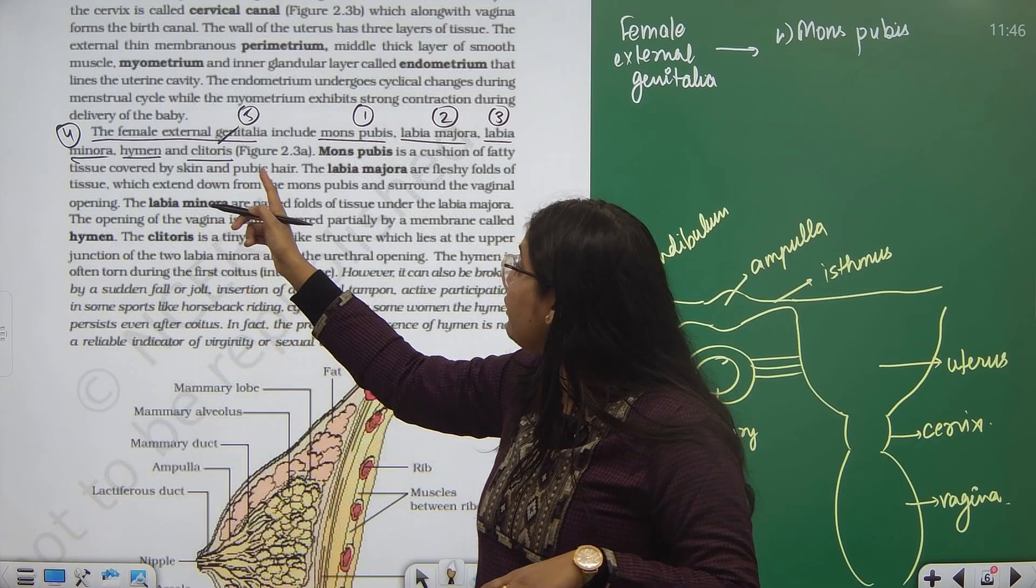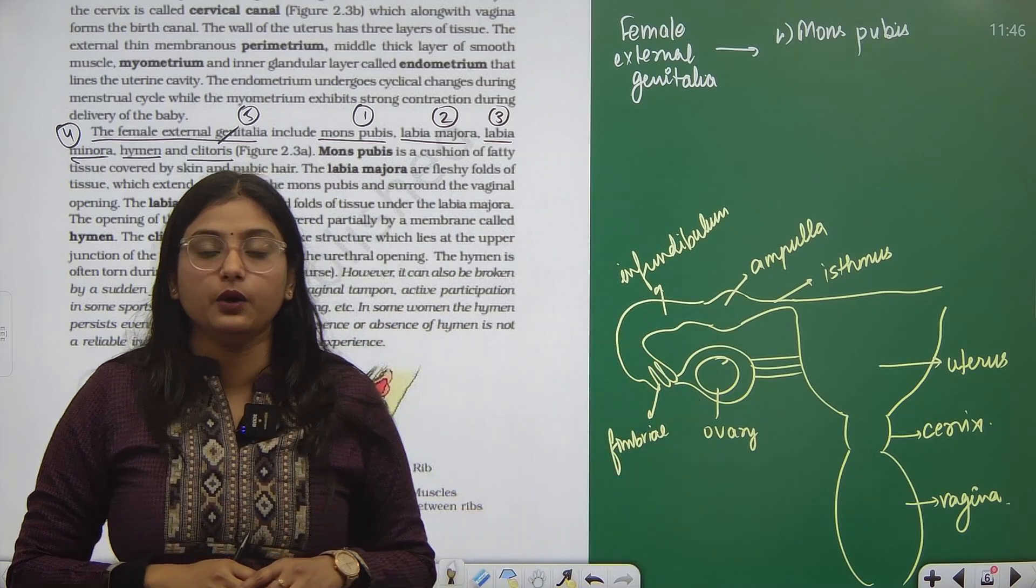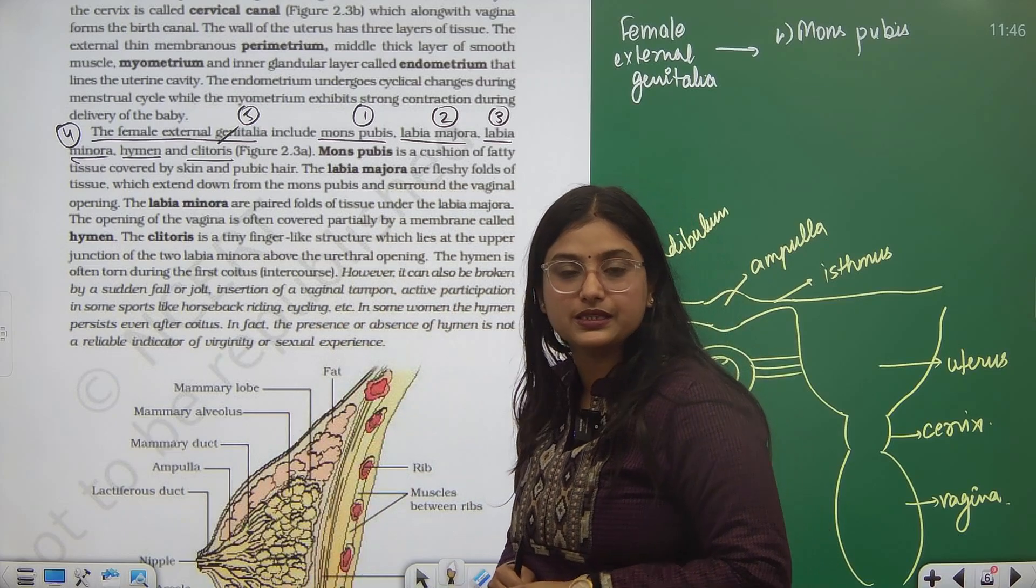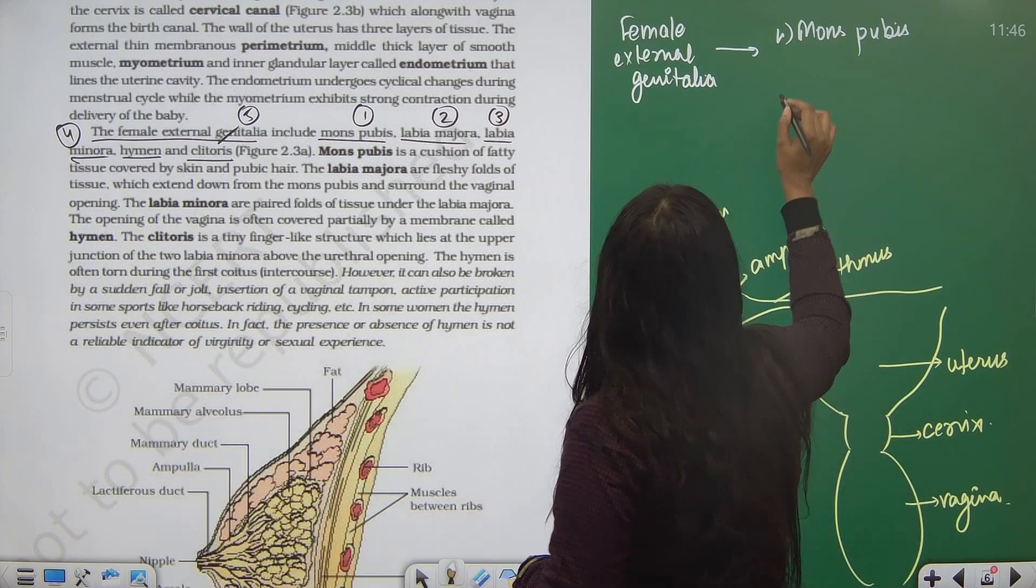Mons pubis is a cushion of fatty tissue which is covered on the top by skin and we have pubic hair. That region of external genitalia which basically comprises of the maximal pubic hair is the mons pubis, and it is outlined on the cover by skin.